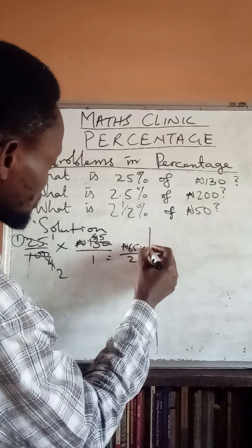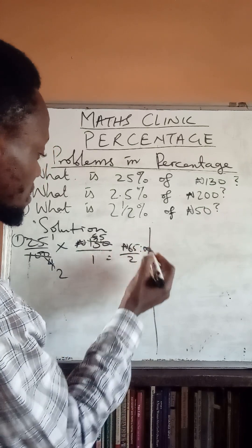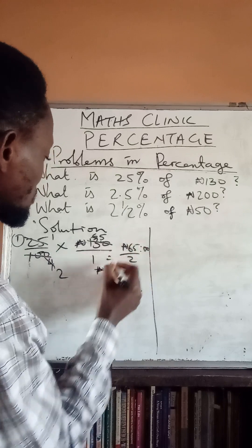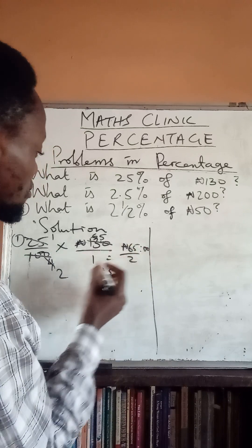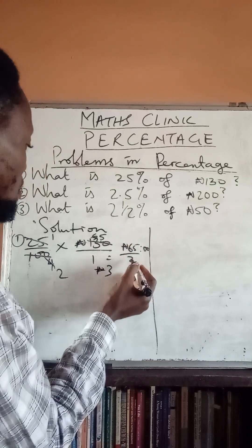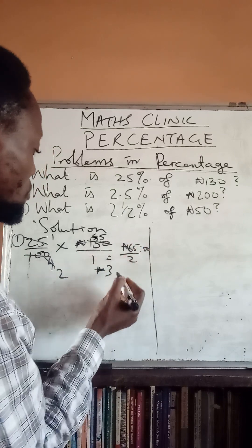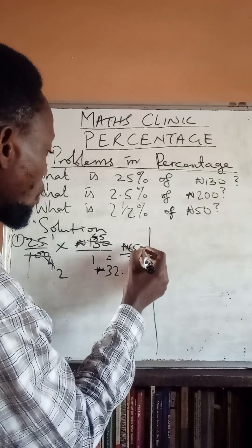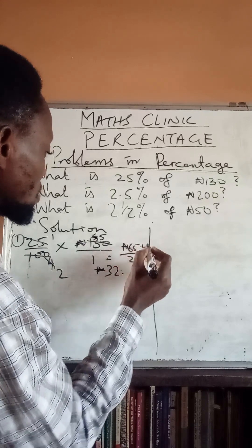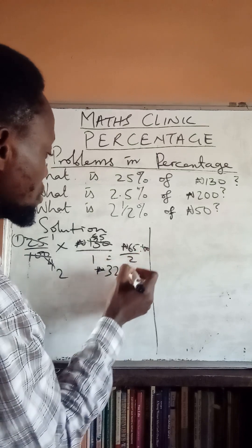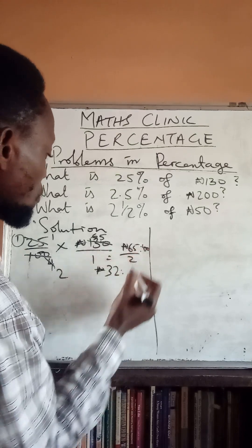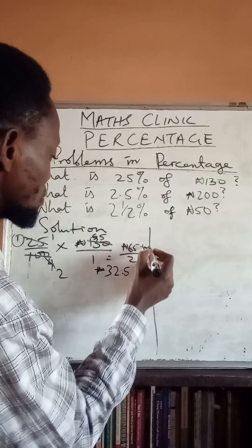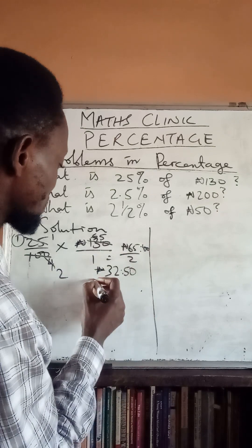Now 2 into 65: 2 into 6 gives 3, 2 into 5 gives 2 remainder 1, bring the 1 down making it 10, 2 into 10 gives 5, and 2 into 0 gives 0. So the answer here is 32 naira 50 kobo.